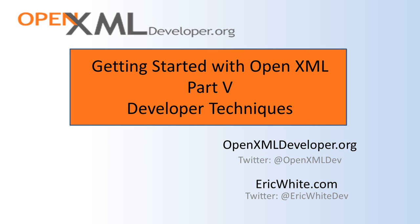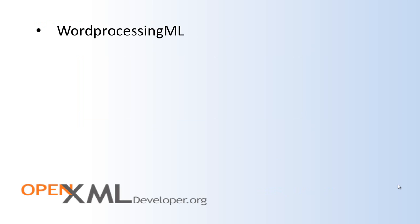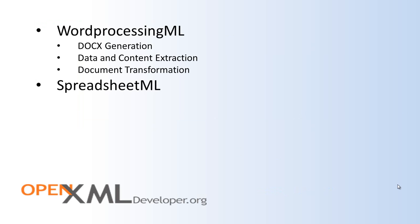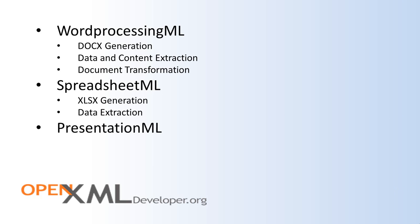In screencasts three and four, we saw that there are basically six varieties of scenarios. For WordprocessingML, the first and most important scenario is document generation, the second is data and content extraction, and the third is document transformation. For SpreadsheetML, the most important scenario is spreadsheet generation and the next is data extraction. For PresentationML, the main scenario is PowerPoint generation. 95% of all OpenXML applications fit into one of these six scenarios.